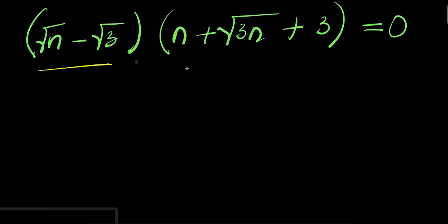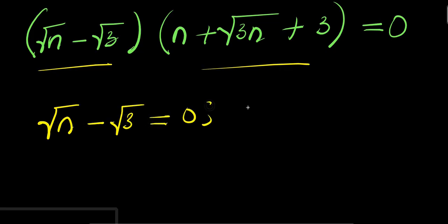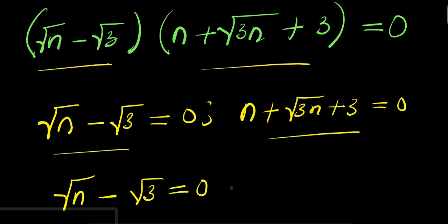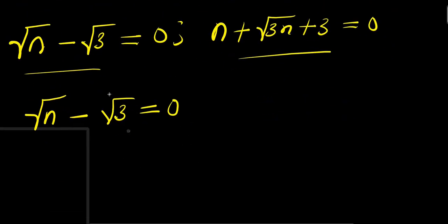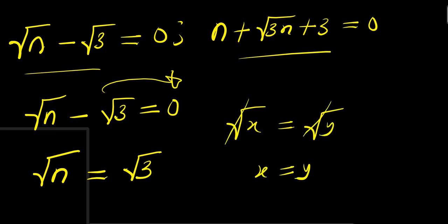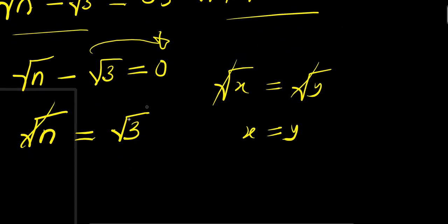From here we equate each factor to 0. First: square root of n minus square root of 3 equals 0. Solving for n, we move the term over: square root of n equals square root of 3. Since square root of x equals square root of y means x equals y, this gives us n equals 3. That is n₁.